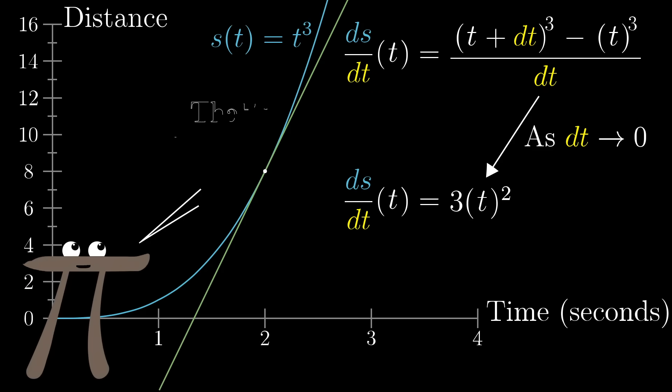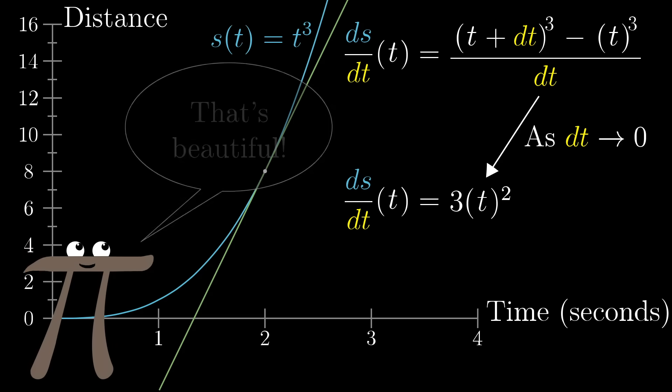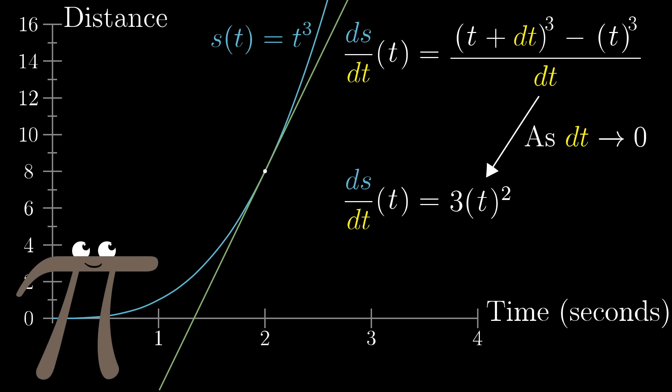Now take a step back, because that's beautiful. The derivative is this crazy complicated idea. We've got tiny changes in distance over tiny changes in time, but instead of looking at any specific one of those, we're talking about what that thing approaches. I mean, that's a lot to think about. And yet, what we've come out with is such a simple expression, 3 times t squared.